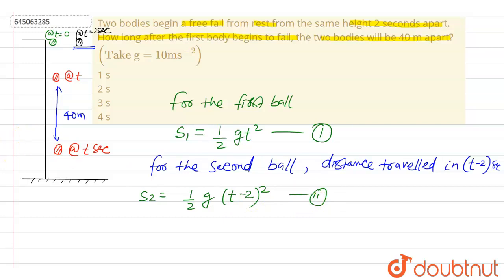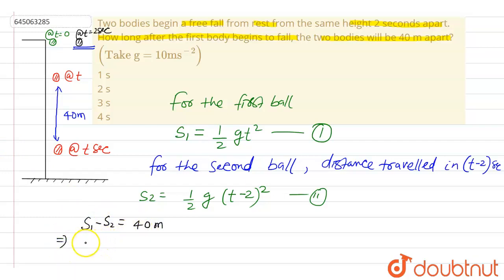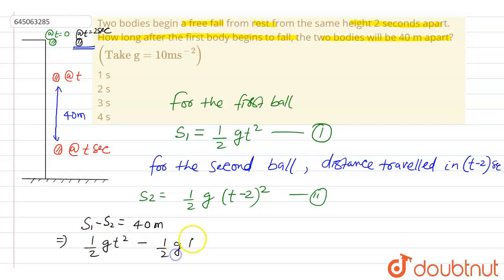The difference of the two distances is 40 metres, so we can write S1 − S2 = 40 metres. Substituting, we get: ½gt² − ½g(t − 2)² = 40.